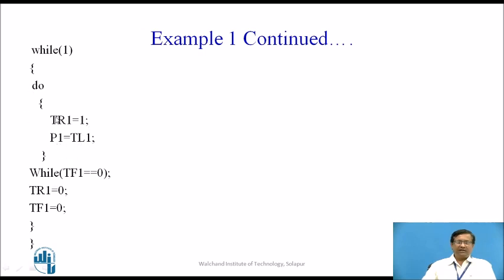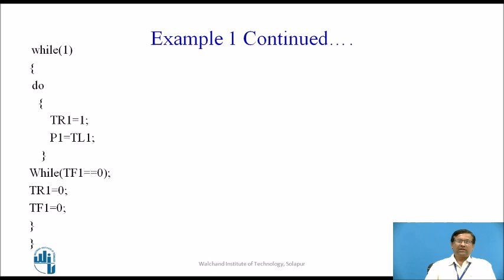This operation continues until TF1 equals 1, meaning the count reaches the maximum value of 255. When TF1 is set, the counter is stopped by clearing TR1 to 0 and TF1 to 0, and the process is repeated again from the beginning. This is the complete explanation of Timer 1 in Mode 2.